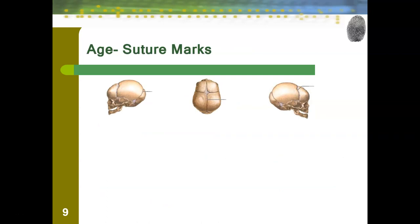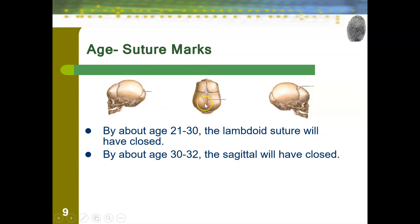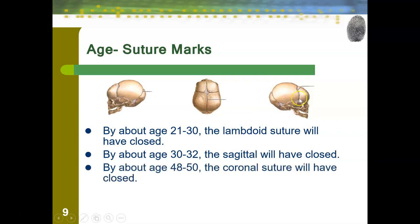Some of the biggest things we use to determine age are the suture marks on the skull. When you are born, your skull is actually multiple different bones that fuse into one solid bone over time. By about age 21 to 30, the lambdoid suture across the backside of your head will have closed. By age 30 to 32, the sagittal suture running front to back across your head will have closed. By about age 48 to 50, the coronal suture near the front of your head running side to side will have closed. As they close, the zigzag pattern becomes much smoother and less visible.